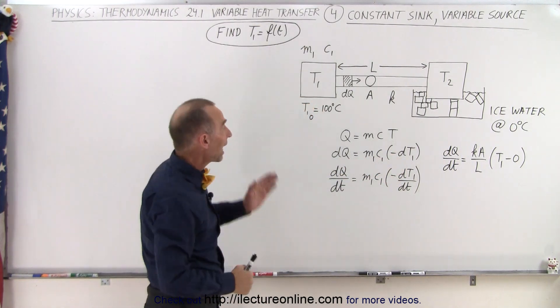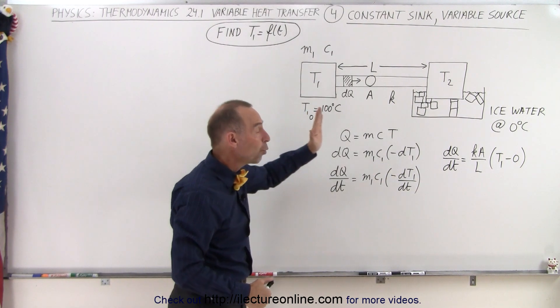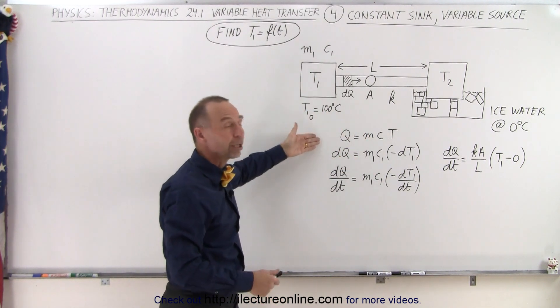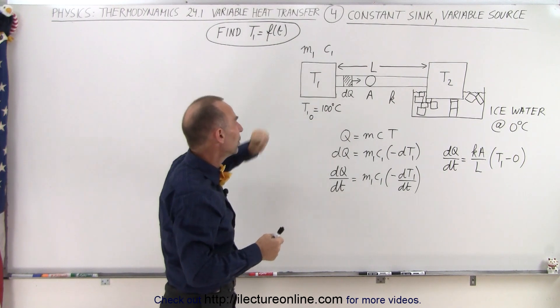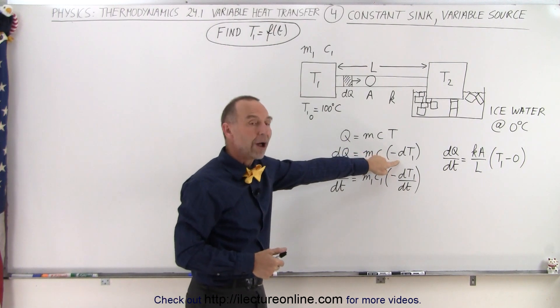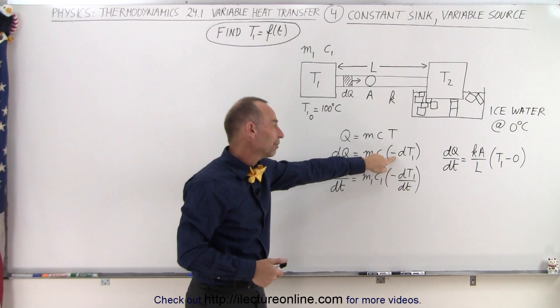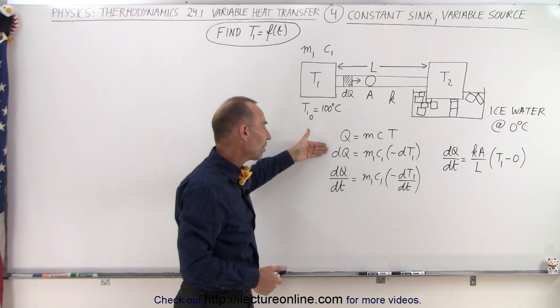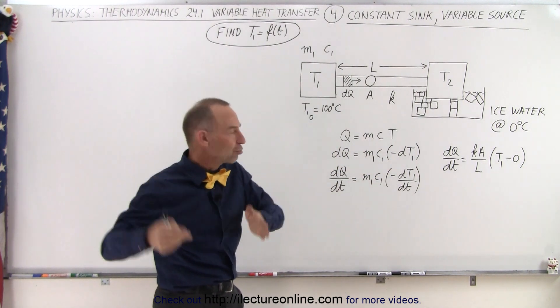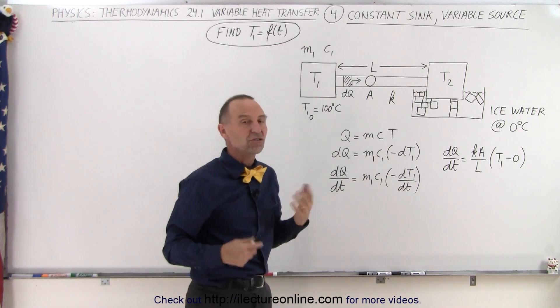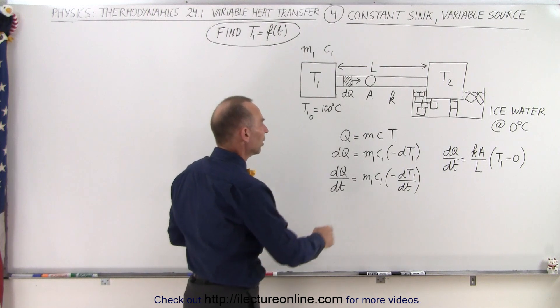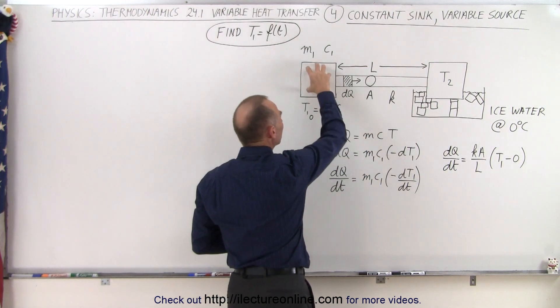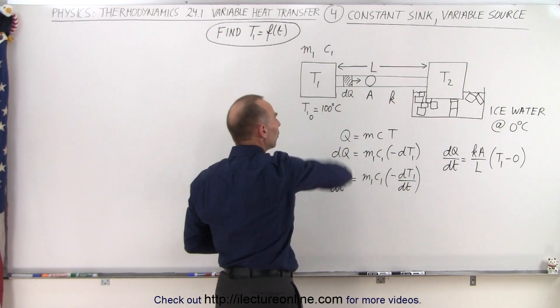Now, why the negative? Well, as heat is being transferred away from T1, if we call that a positive quantity, the amount of heat being taken away from T1, then the temperature will drop, and so therefore we need a negative to indicate that as heat is being transferred, we call that a positive heat transfer, we have a negative change in the temperature. It depends how you want to define it, but that's perfectly fine. The subscript simply means that we're dealing with the source T1 here.